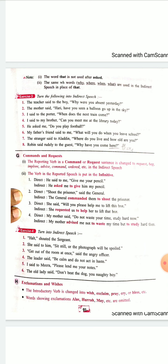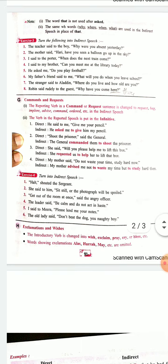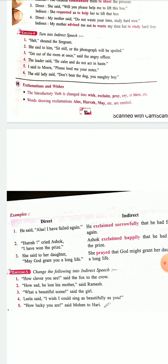Then you have exclamations and wishes — where you put an exclamatory mark, and wishes are when you are praying. For example, she prayed that God might help her, or God might grant her her wish — that is called exclamations and wishes. It is explained very well on the next page: 'He said, alas I have failed again' — he exclaimed sorrowfully that he had failed again. 'Hooray' is exclaimed happily. And the third: 'She said to her daughter' — she prayed that God might grant her daughter a long life. 'May' has become 'might'. This is how you change sentences with an exclamatory mark — no more exclamatory mark is put in the indirect speech. Exercise 5 is what you are supposed to do, and we complete the chapter at Exercise 5.